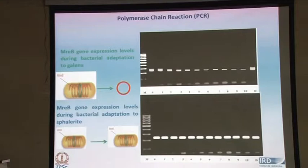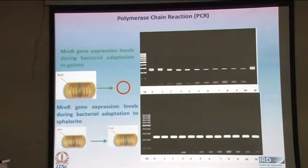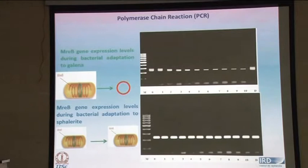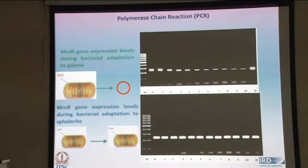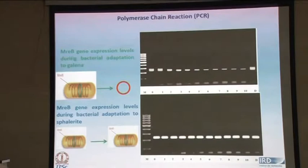The top plot is for galena-adapted strains — meaning the microorganisms were grown in the presence of lead sulfide (galena). You can see the expression levels as a function of adaptation cycle. Up to 10 adaptation cycles, the MRP expression proportionately decreases, meaning the bacteria is changing its shape from rod to spear. In the case of sphalerite, there is no change in the expression levels of the MRP sequence. This clearly shows that Bacillus megaterium adopts a strategy to overcome lead toxicity by changing its shape from rod to spear, not allowing intracellular uptake of lead.